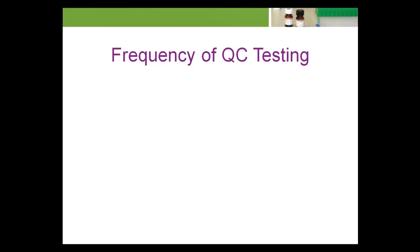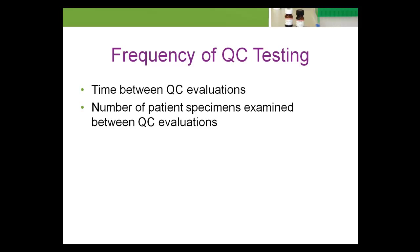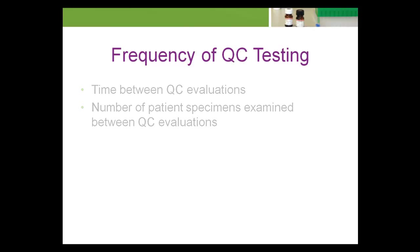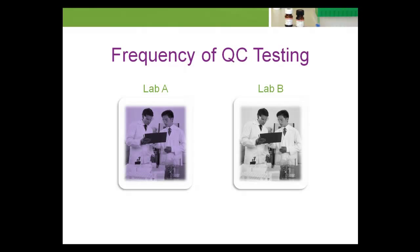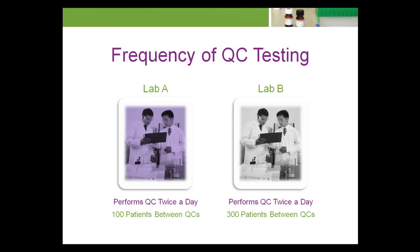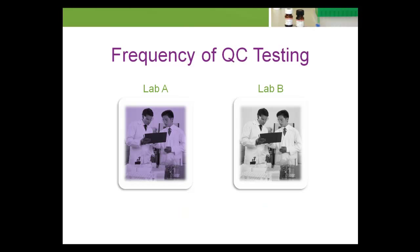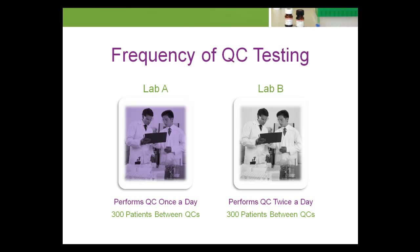There are two different ways that the frequency of QC testing can be considered: in terms of the time between QC evaluations, or the number of patient specimens examined between QC evaluations. Two laboratories that perform QC testing at the same frequency in terms of time could be testing at very different frequencies in terms of number of patient examinations between QC evaluations. Likewise, two laboratories testing at the same frequency in terms of patient examinations could differ greatly in time interval between QC evaluations.